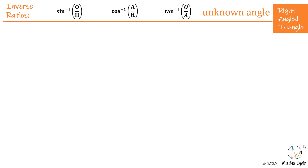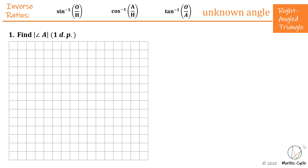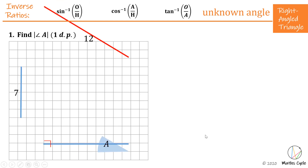We will need these inverse ratios moving forward because we are going to need them to balance equations for finding an unknown angle in a right angle triangle. These tools are all about balancing our equations to find an unknown angle. So let's look at example number one: find the measure of the angle correct to one decimal place.